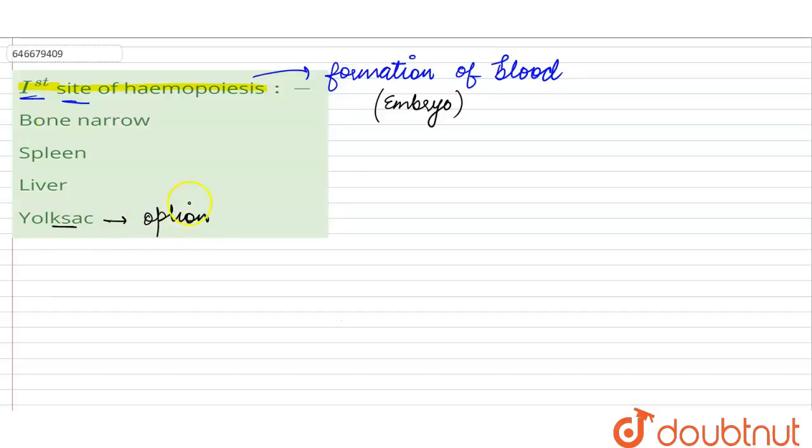So here we can see option number 4 becomes the right answer for this question because this is the first site of hemopoiesis. So let's mark this option as the correct answer.